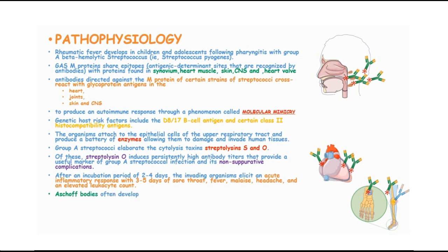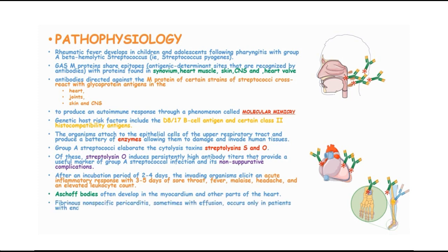Aschoff bodies often develop in the myocardium and other parts of the heart. A fibrinous nonspecific pericarditis, sometimes with pleural effusion, occurs in patients with endocardial inflammation and usually subsides without any permanent damage to these patients.